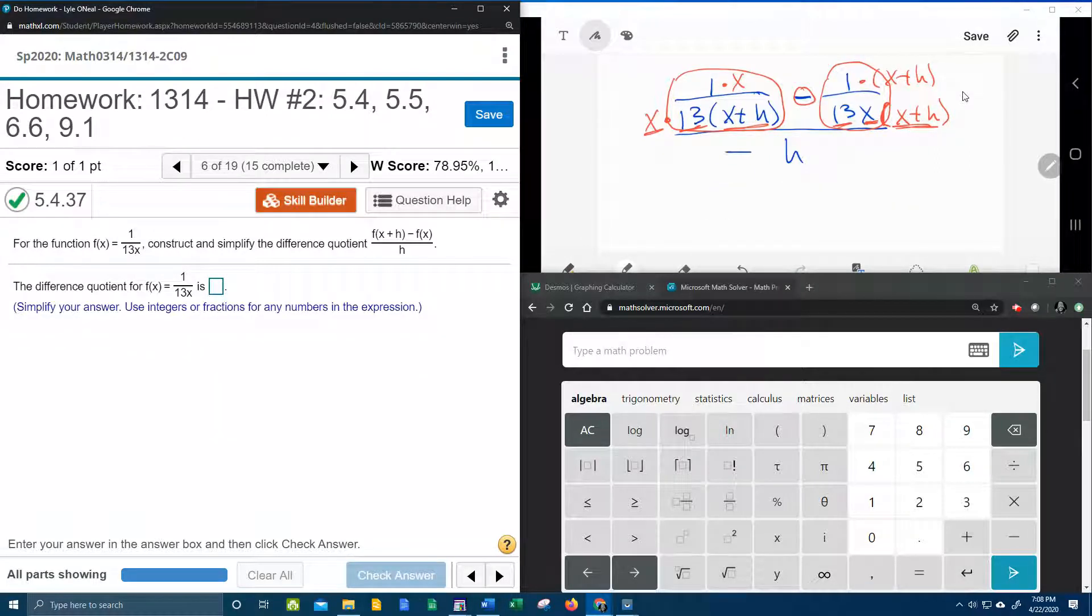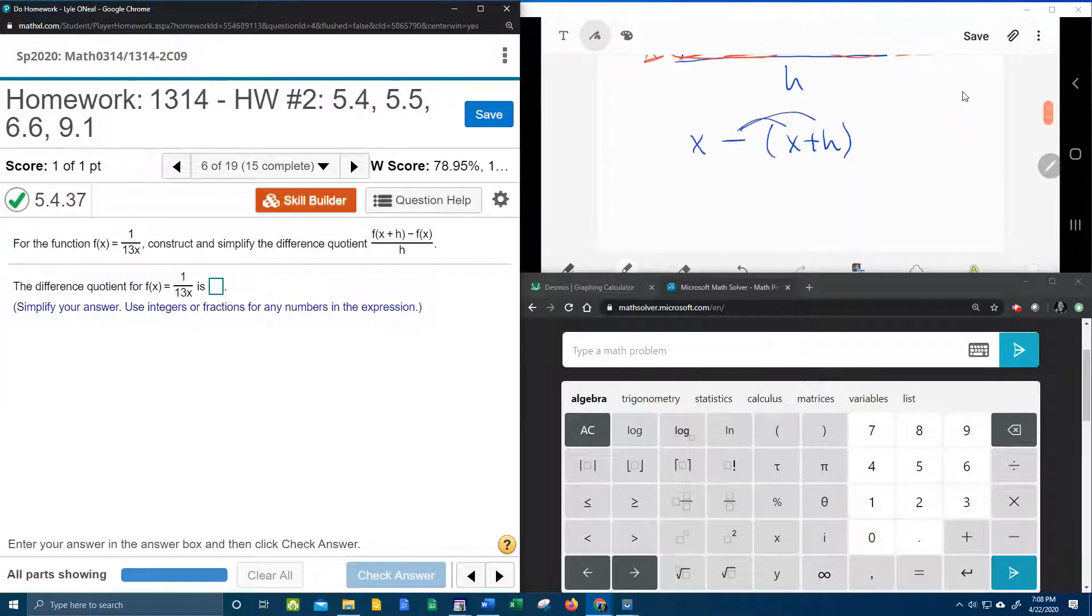So now what is that going to look like? That's going to be x times 1, which is x, minus 1 times anything is itself. So 1 times x plus h is just x plus h. I do need to put that in parentheses so that I'll remember to distribute this negative, all over the common denominator 13x times x plus h, all over h.